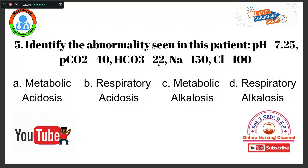Question number 5: Identify the abnormality seen in this patient. The pH level is 7.25, PCO2 is 40, bicarbonate level is 22, sodium level is 150, and chloride level is 100. Which type of abnormality does this patient have? Option A, metabolic acidosis. Option B, respiratory acidosis. Option C, metabolic alkalosis. Option D, respiratory alkalosis.